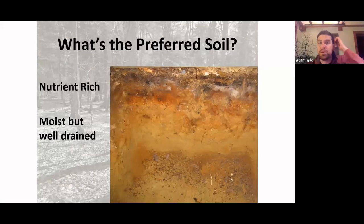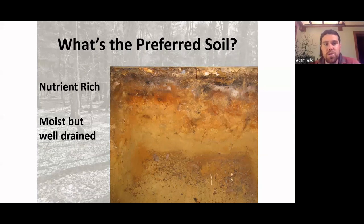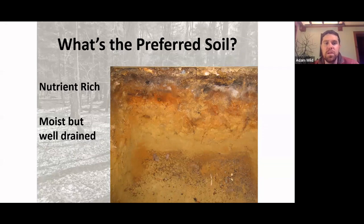The preferred soil for maple trees — especially sugar maples — is nutrient-rich, high in calcium, moist but well-drained. Red maples are more tolerant of poor nutrients and are okay with wetter or drier soils. Sugar maples really like nutrient-rich soils and moist but well-drained conditions — not completely dry, but no standing water.